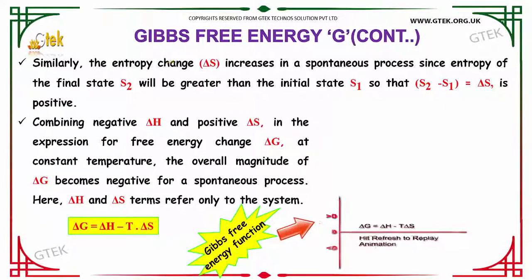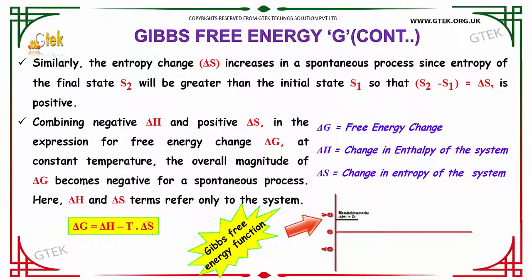Similarly, the entropy change delta S increases in a spontaneous process. Since entropy of the final state S2 will be greater than the initial state S1, so that S2 minus S1 equals delta S is positive. Combining negative delta H and positive delta S in the expression for free energy change delta G at constant temperature, the overall magnitude of delta G becomes negative for a spontaneous process.